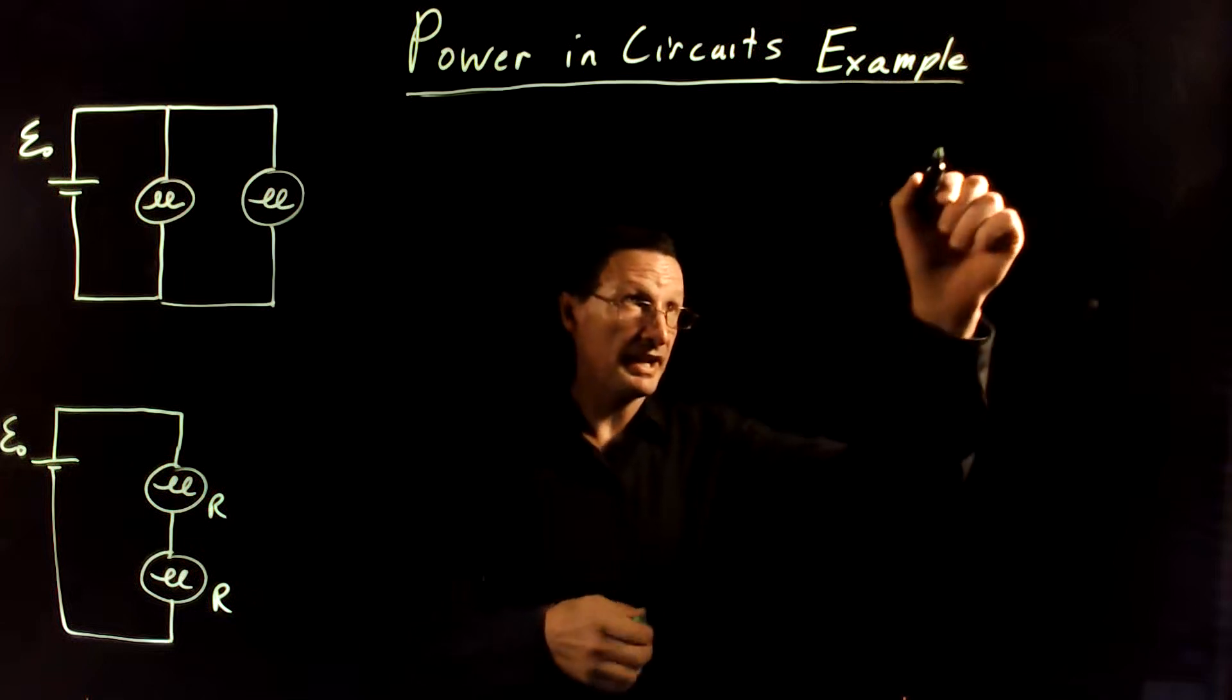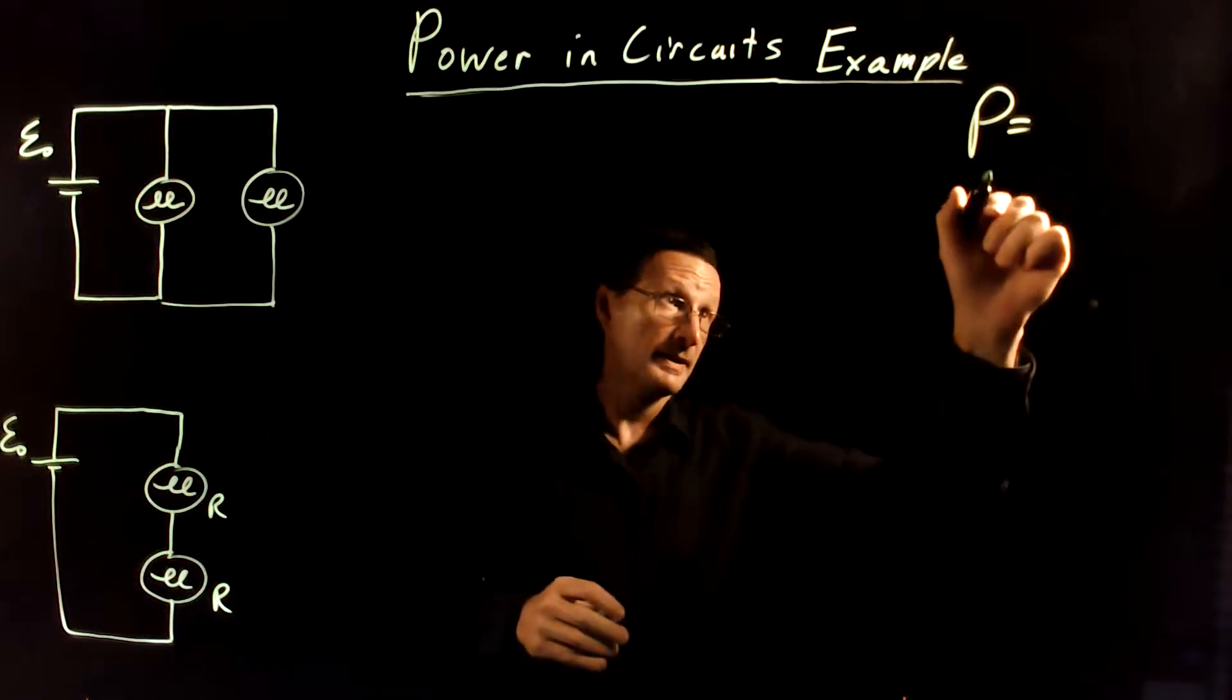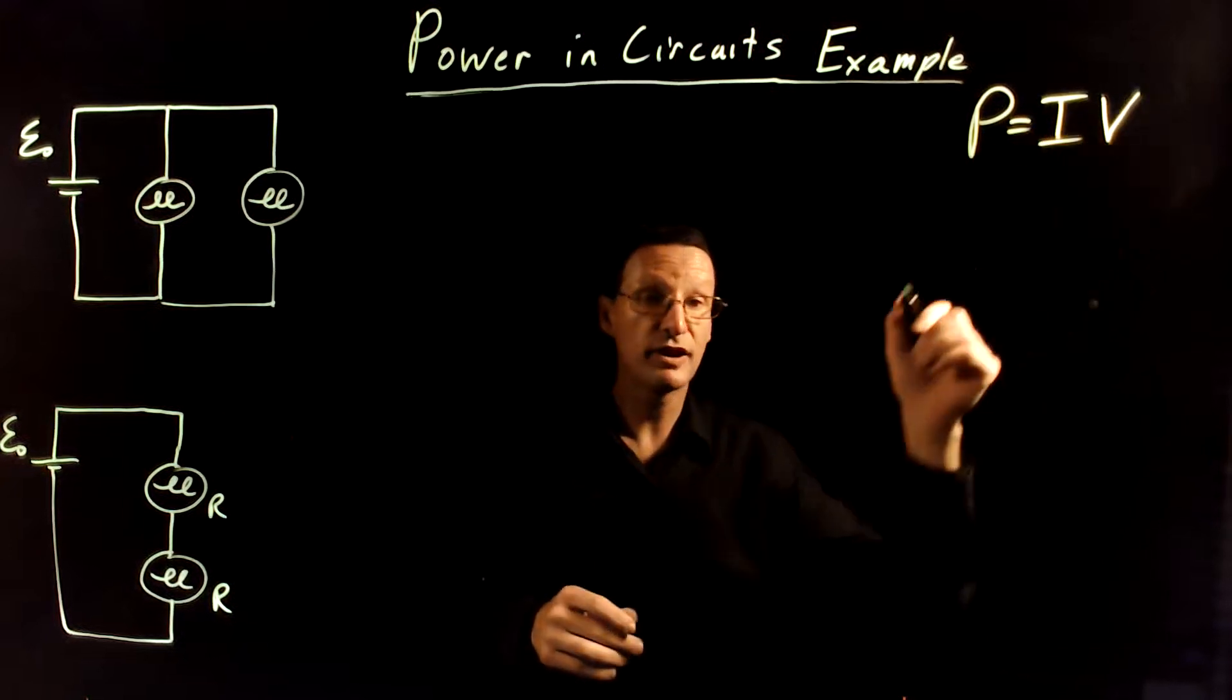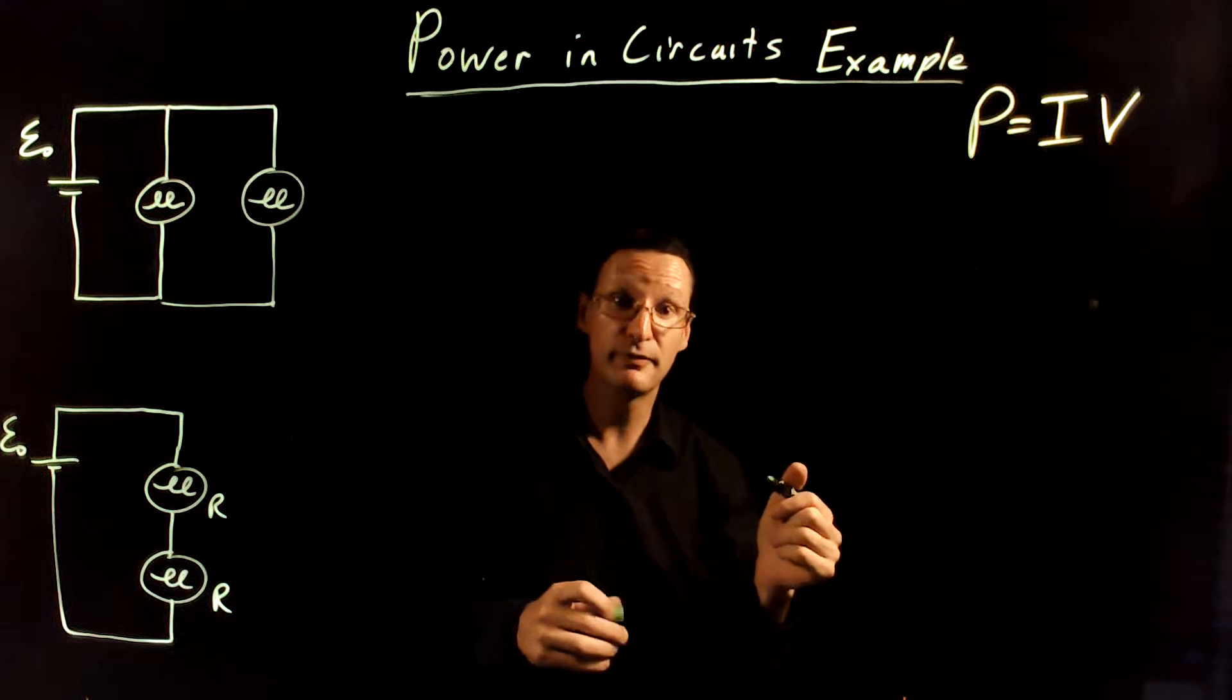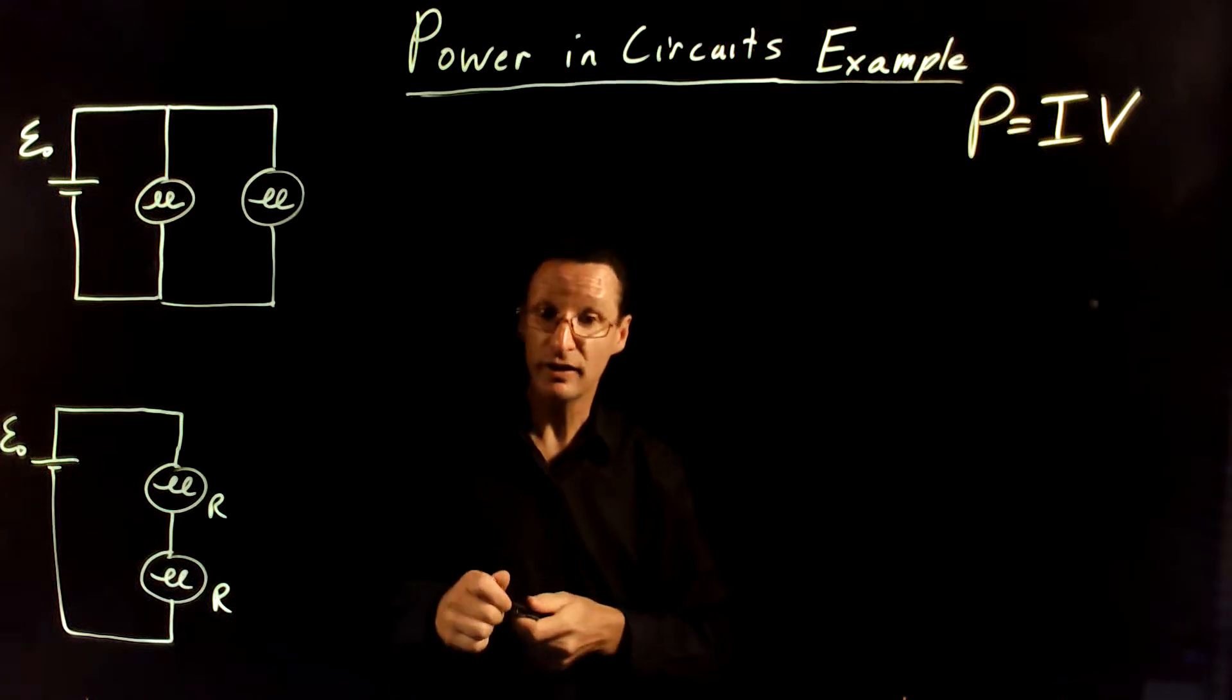Now, it's true that to find power for any object, the electrical power dissipated, you just take the product of the current through that object times the voltage drop across that object, and that will give you the power. And this works with or without Ohm's Law.